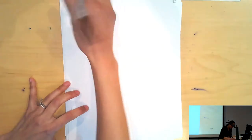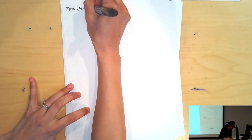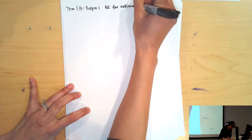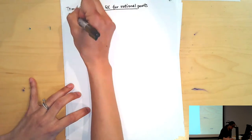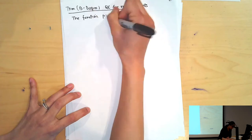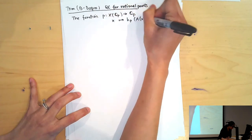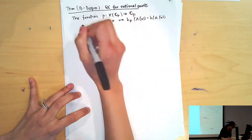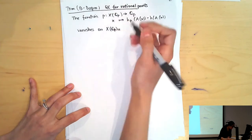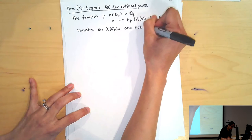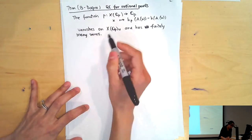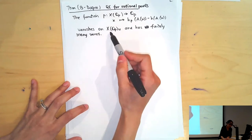So the theorem - this is joint work with Netan Dogra - is quadratic Chabouty for rational points in our setup. The function rho that sends X to the local height of this representation minus the global height vanishes on X(Q_p)^U, which was this thing that was very close to X(Q_p), and has finitely many zeros.